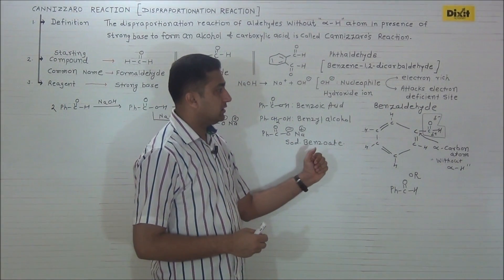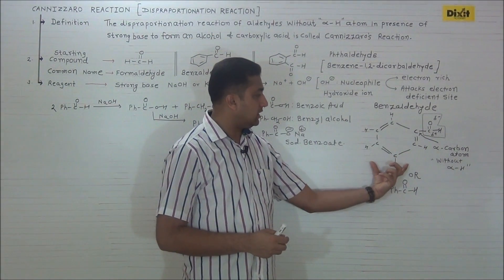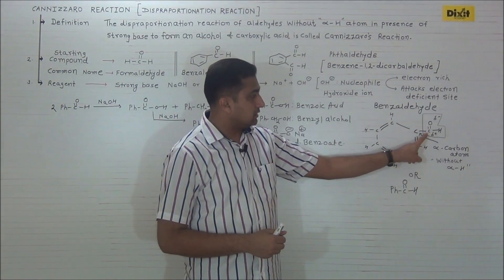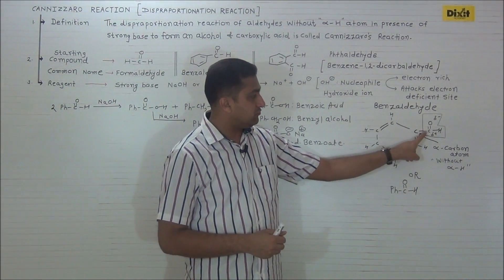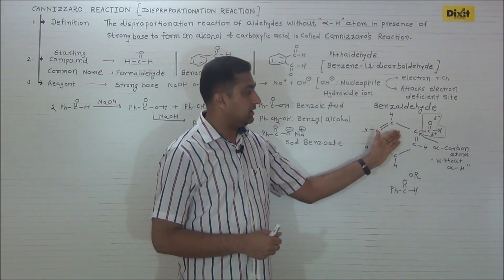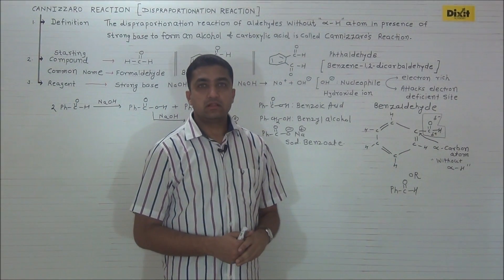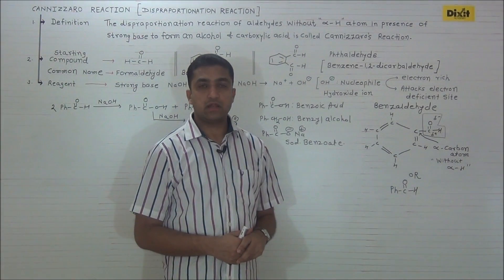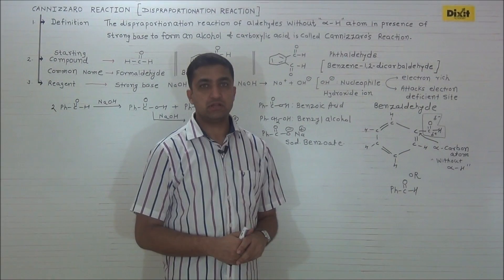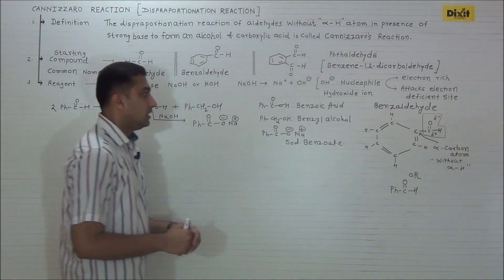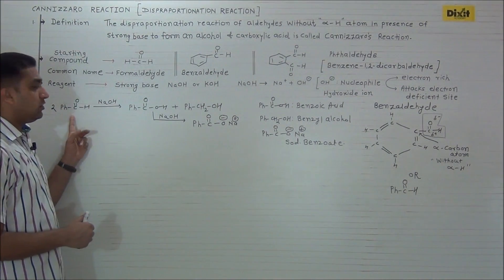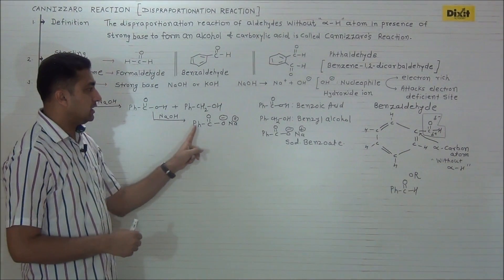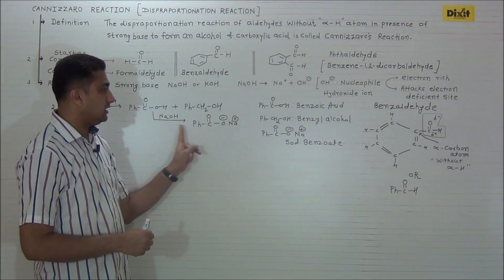Let us study the Cannizzaro reaction of benzaldehyde. In benzaldehyde, the aldehyde group is directly attached to the benzene ring. This is the carbonyl carbon. The carbon directly attached to the functional group is called the alpha carbon atom. It is clear from the structure that benzaldehyde does not contain an alpha hydrogen atom, and hence it undergoes disproportionation reaction.